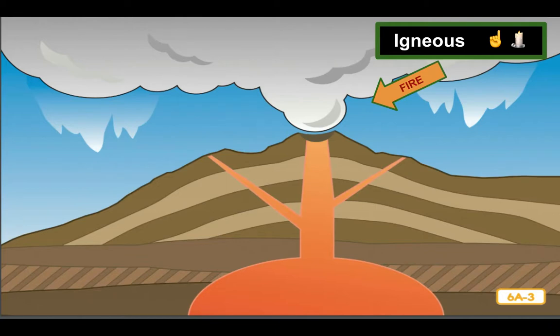The magma is constantly being forced toward the surface by pressure from within the earth. As it travels upward from the mantle through the crust, the magma begins to cool and harden. Sometimes the magma will erupt from a volcano, but sometimes the conditions aren't quite right for an eruption. Over time, heat forms magma and pressure moves the magma. When the magma cools, it forms igneous rock.